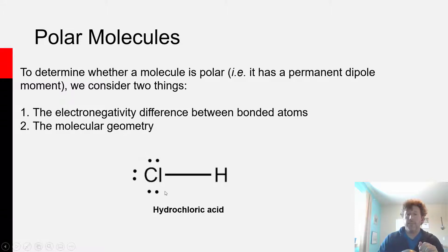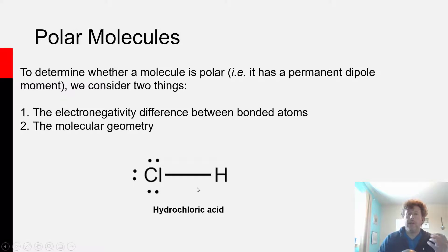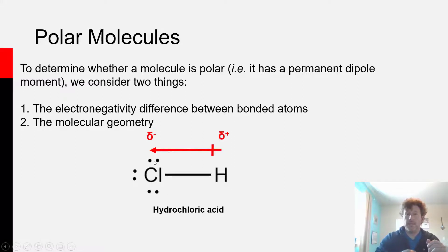For a linear molecule like hydrochloric acid, this is a polar bond because we have an electronegativity difference between chlorine and hydrogen. The bond dipole points towards the chlorine, and that's also the only bond in the molecule. So for a linear heteronuclear diatomic like this, if the bond is polar, the molecule is polar — period. Not too hard a decision to make.